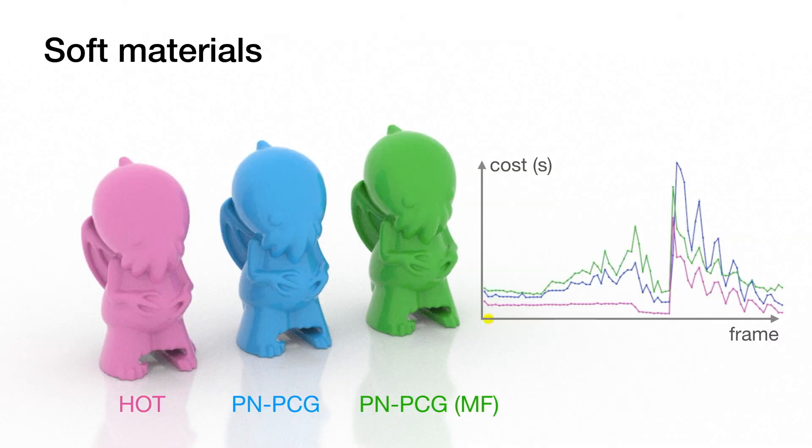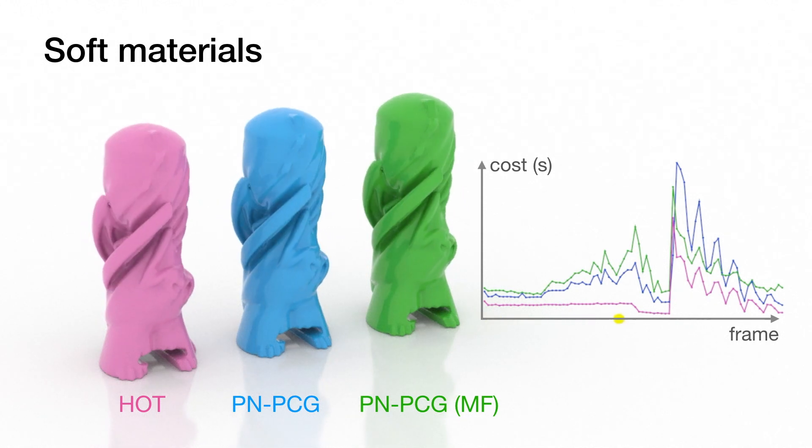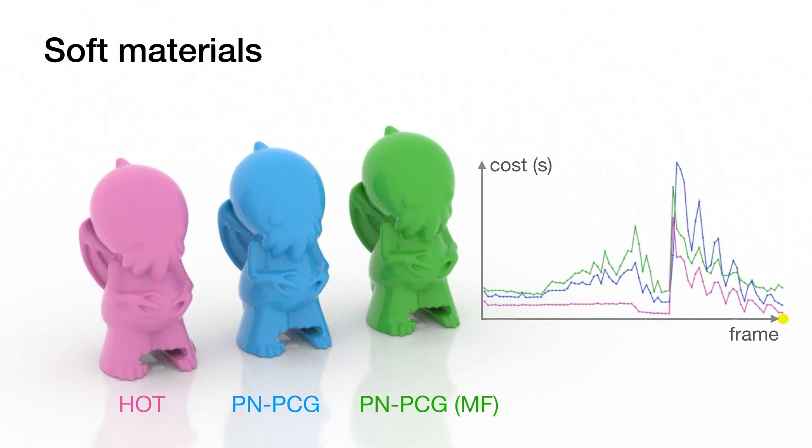In a homogeneous scene with an easier soft material example, we show that HOT already moderately outperforms traditional Newton-Krylov methods both with and without the matrix-free option in nearly every frame.